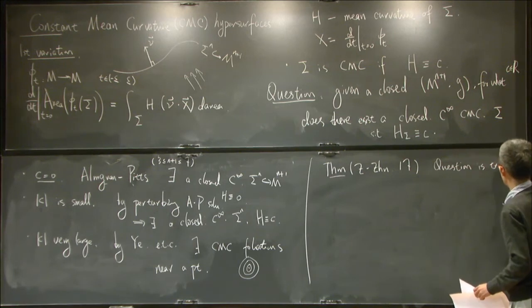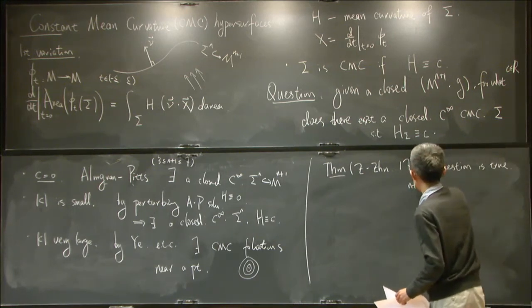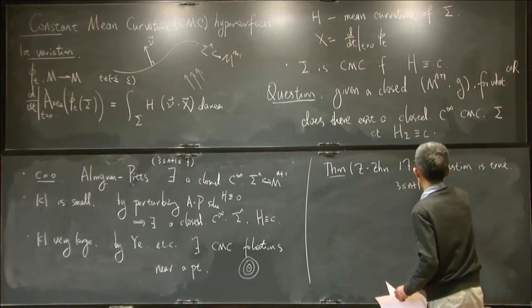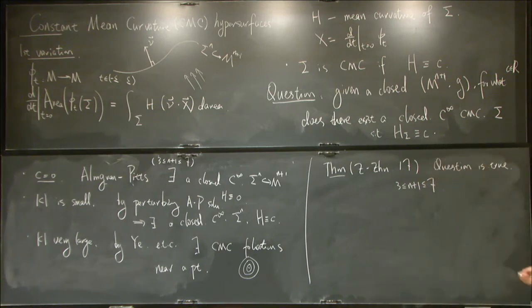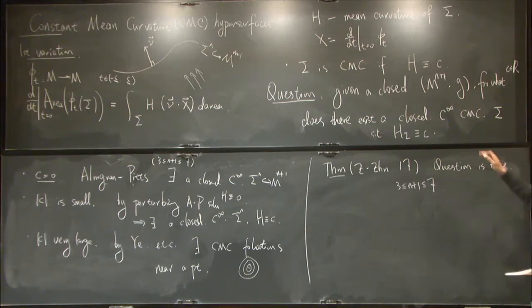The answer is true, while still assuming that the dimension is between 3 and 7. That's to say, given any closed Riemann manifold with Riemann metric, for any number c, we can always produce a closed, smooth hypersurface whose mean curvature is given by this number c.